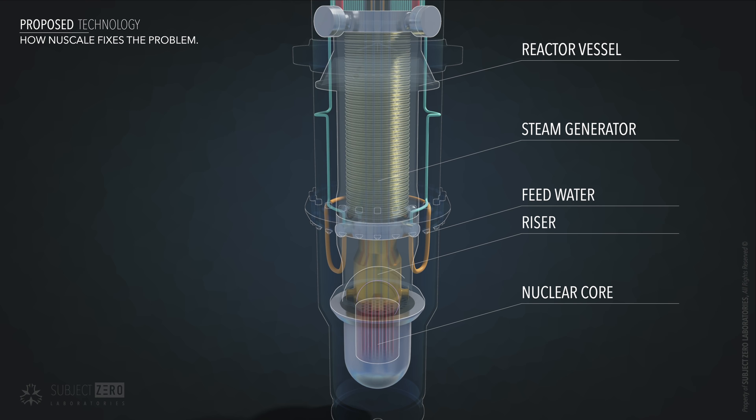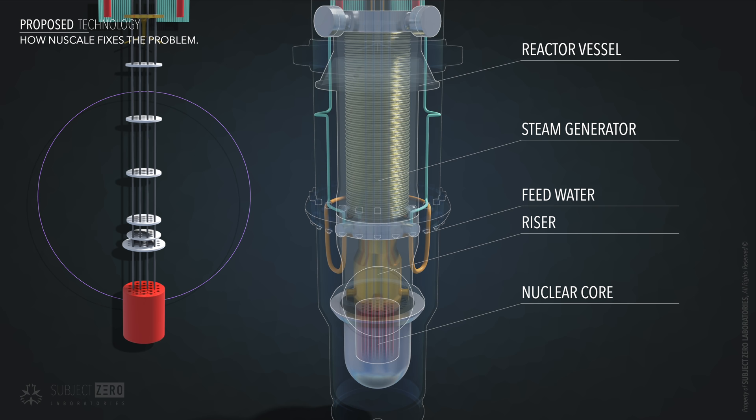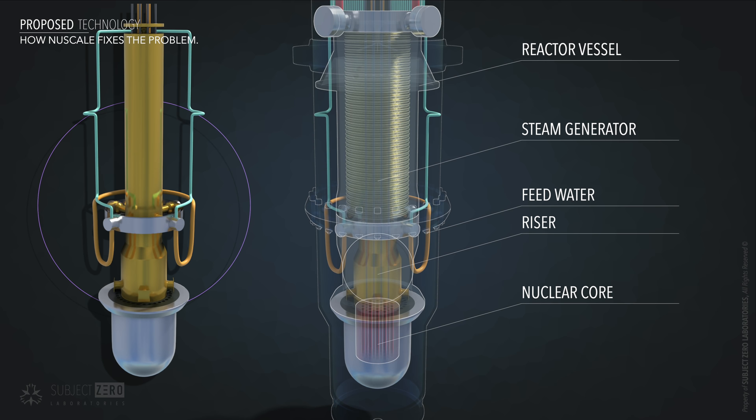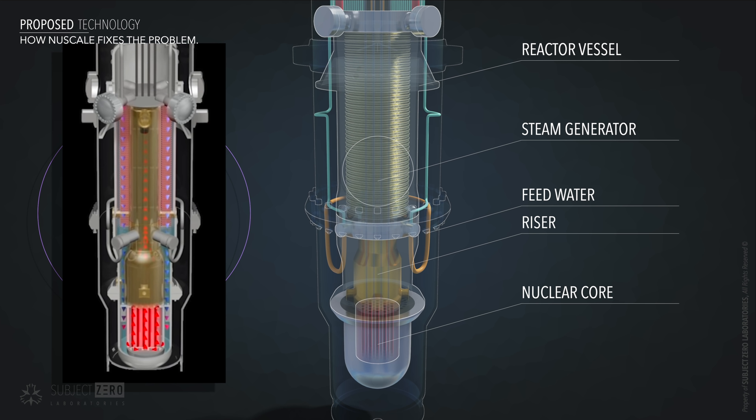Notice the fuel assembly and the control rods. Connected to it, you have the riser, which works like a chimney. When the water is heated, it rises up to the top and goes around, passing by a helical coil steam generator.